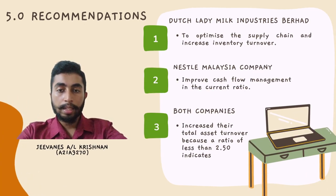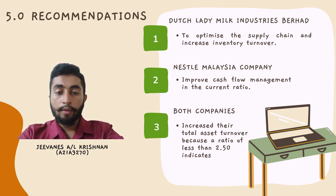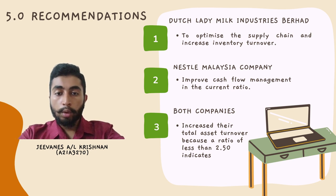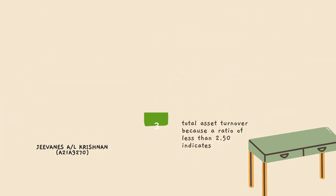Hi, my name is Jonas Krishna, my number is 821-82270. Recommendation: for Dutch Lady, there was a drop in sales from 2019 to 2021, which can be avoided by strengthening supplier relationships and cooperating with them more effectively. For Nestlé Malaysia, a positive current ratio must be maintained for effective cash flow management, by improving invoicing and collection procedures and providing discounts for early payment. Finally, for both companies, increasing total asset turnover is recommended because total assets did not reach target profit at year end, resulting in lower profitability.